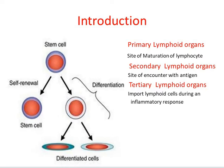The primary lymphoid organs are the thymus and bone marrow, where the maturation of lymphocytes takes place. Secondary lymphoid organs are where the actual encounter of antigen with body molecules takes place. The spleen, lymph nodes, and mucosal-associated lymphoid tissues such as gut-associated lymphoid tissues are secondary lymphoid organs. Tertiary lymphoid organs import lymphoid cells during an inflammatory response and include cutaneous-associated lymphoid tissues.